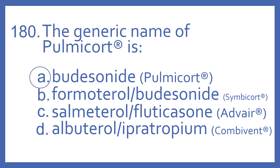And albuterol with ipratropium is the generic name for Combivent, and that's a beta-2 bronchodilator and anticholinergic bronchodilator combination. These are all medications used for various lung diseases — all inhaled products.